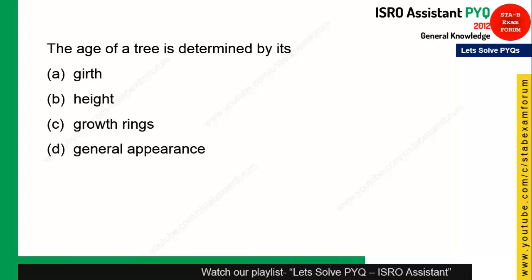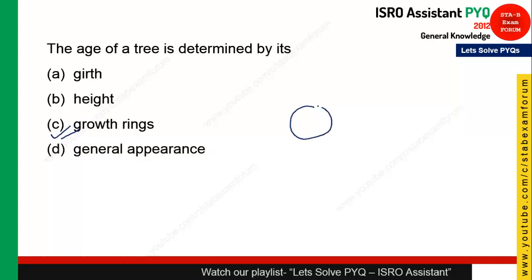The next question: the age of a tree is determined by what? If you want to know how old a tree is, you can determine it using growth rings. If you cut the trunk, you will find rings in the stem, and counting those rings tells you the tree's age. Growth ring is the correct answer.